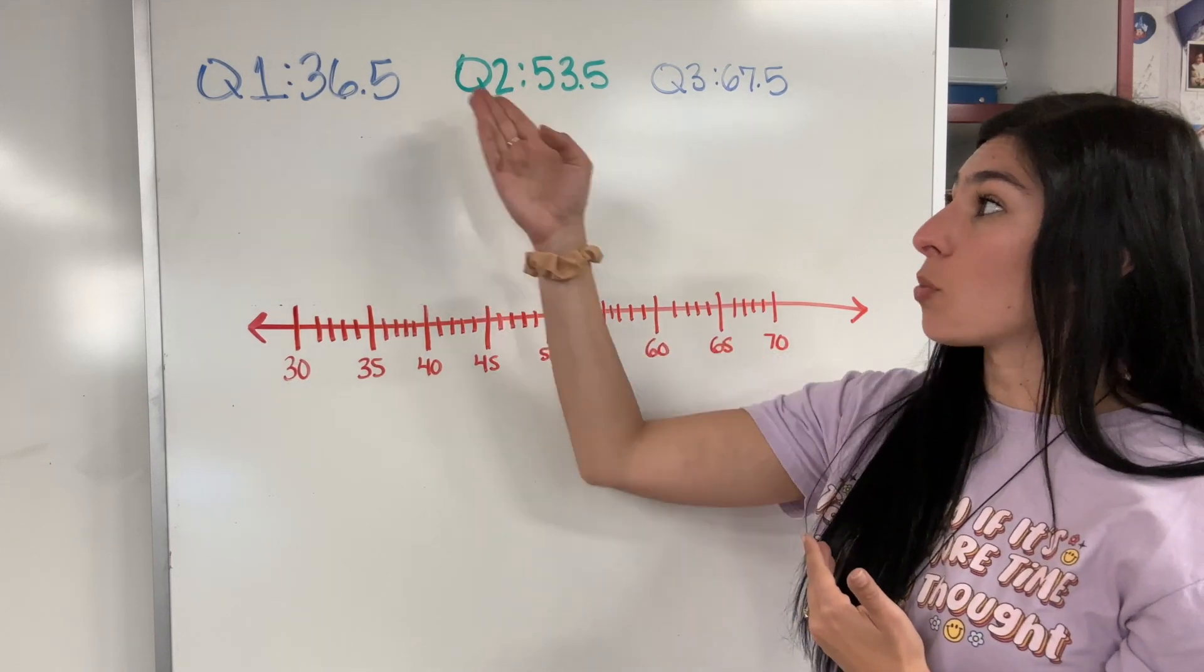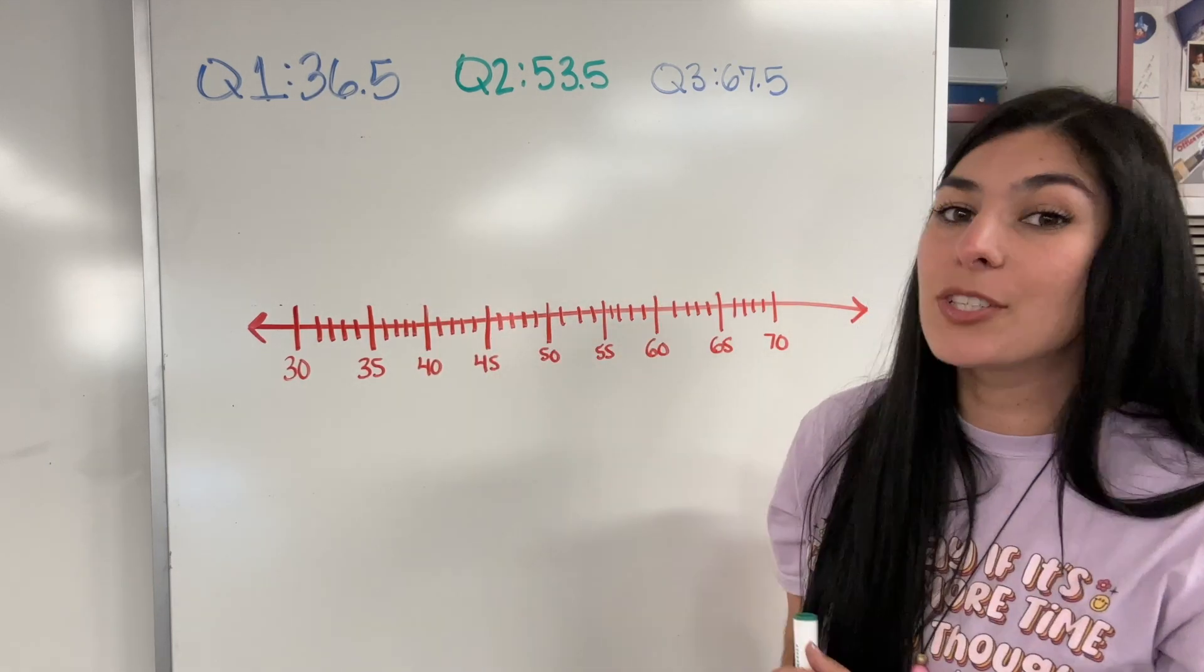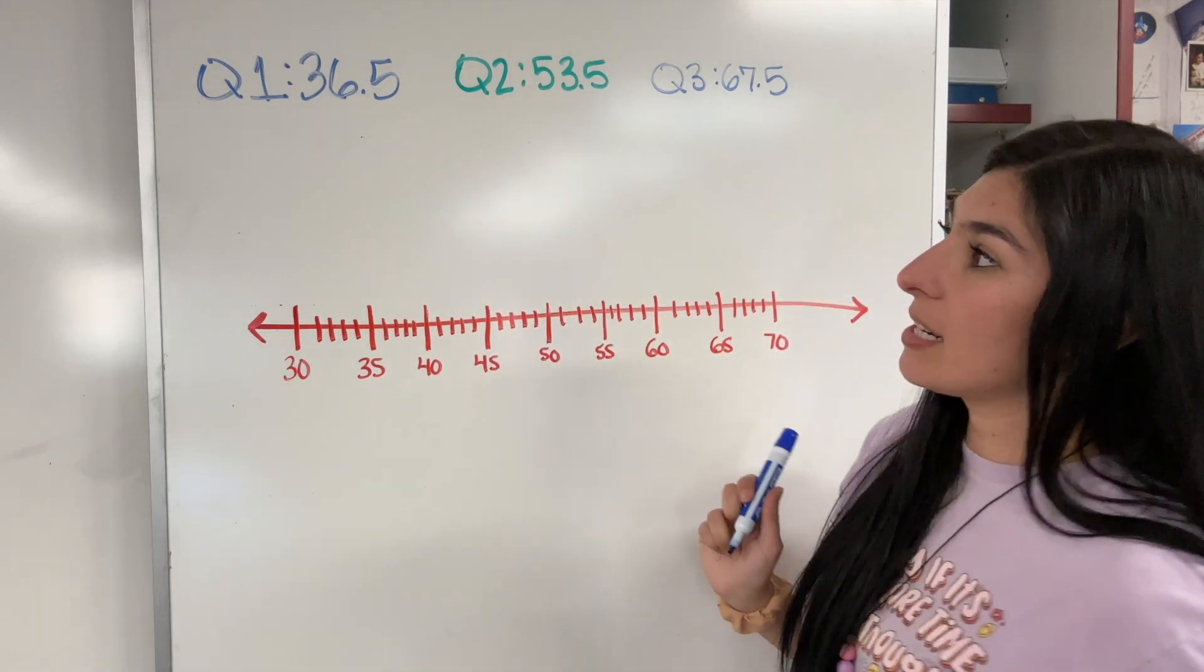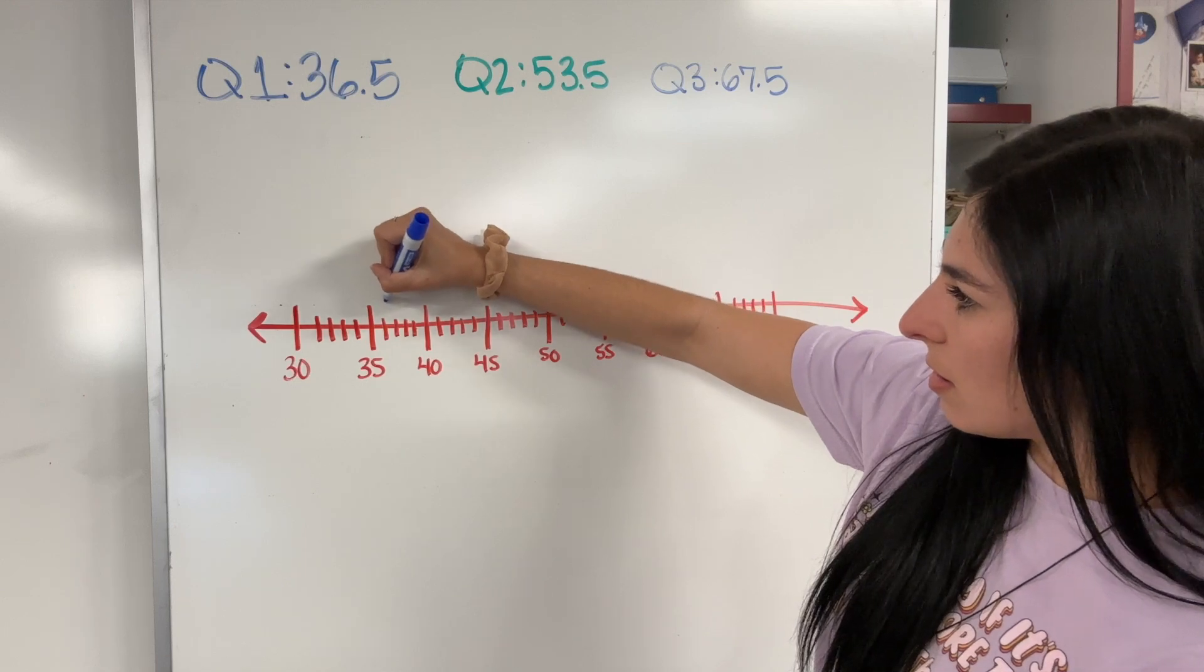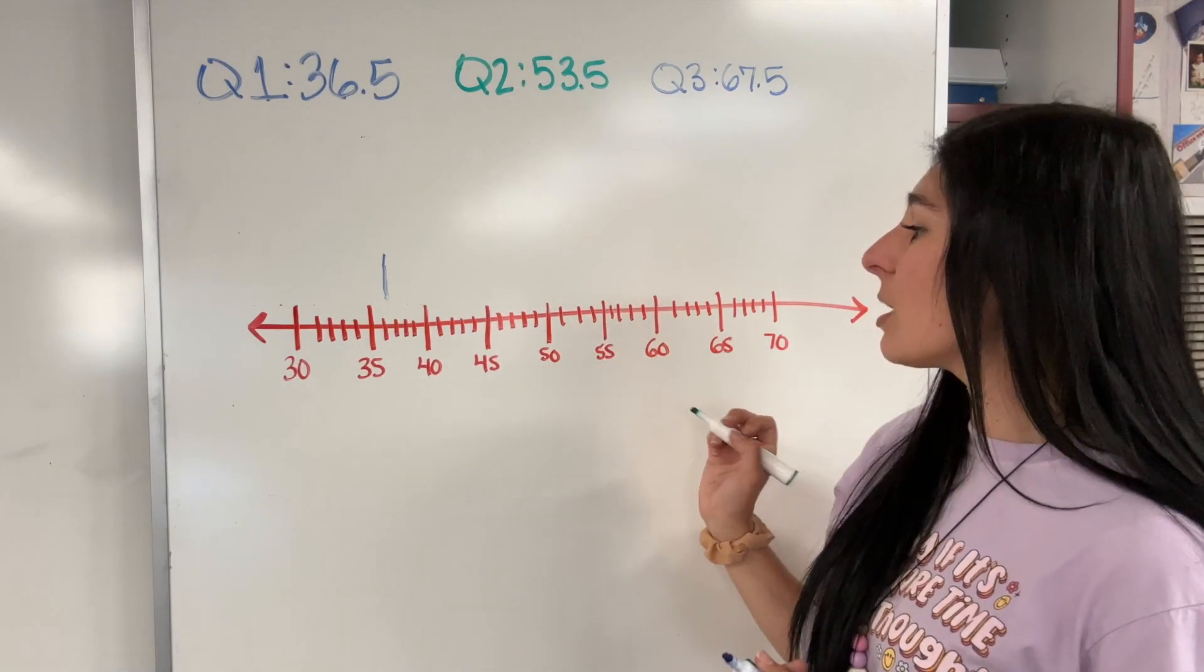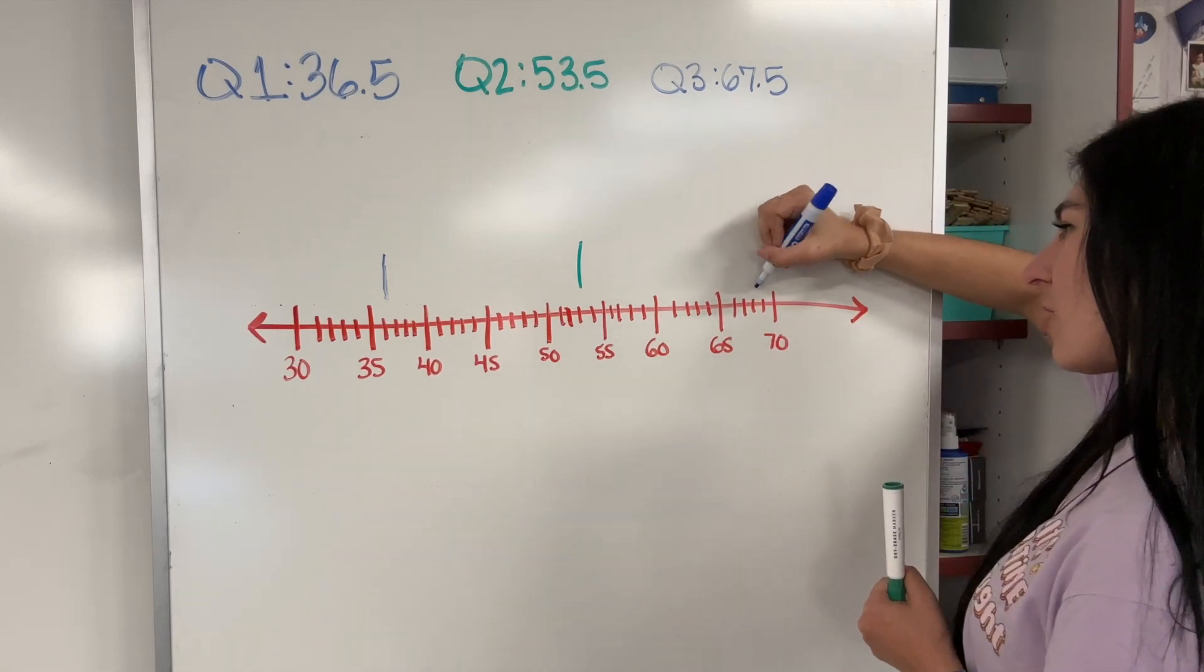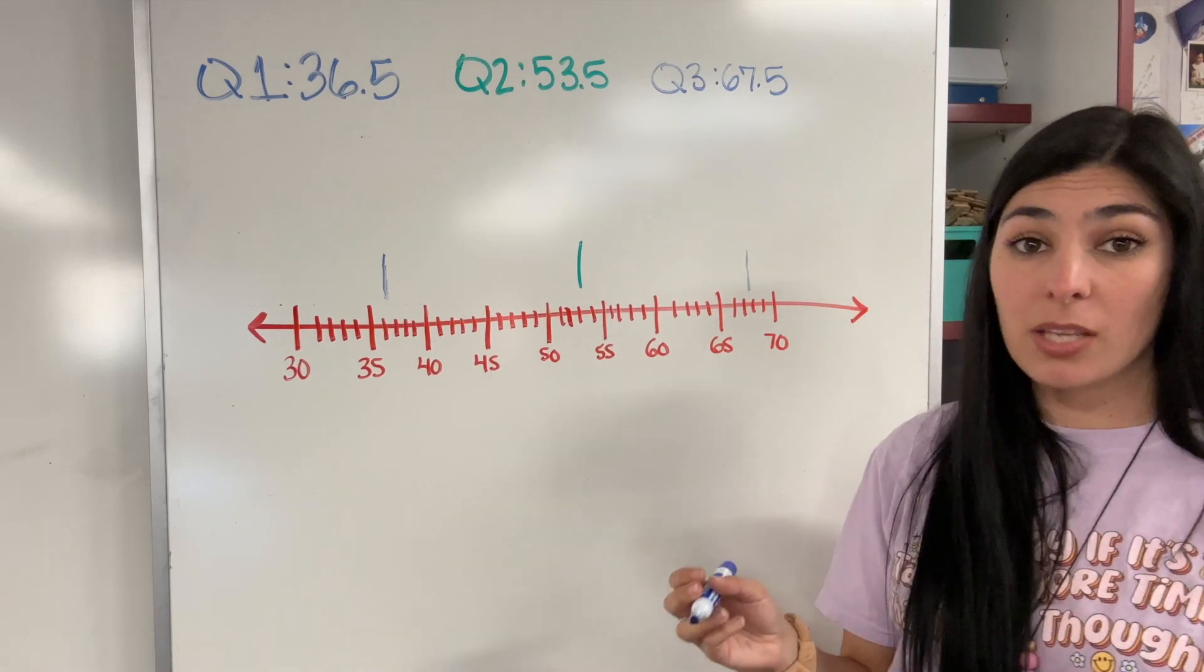Now that we have our quartiles 1, 2, and 3, we're going to draw our box plot or box and whisker diagram. It doesn't matter which one you start with, but you have to plot each one. Quartile 1 is 36.5. Notice my line across the bottom does not start at zero, but it does consistently count by fives. I made this fit whatever I needed, which is totally fine. I have 36.5, 36 in the middle there, and I'm going to draw a line rather than a dot. Now I need my quartile 2, 53.5, and then quartile 3, 67.5. There are my quartiles. I'm going to now connect them and turn them into a box.